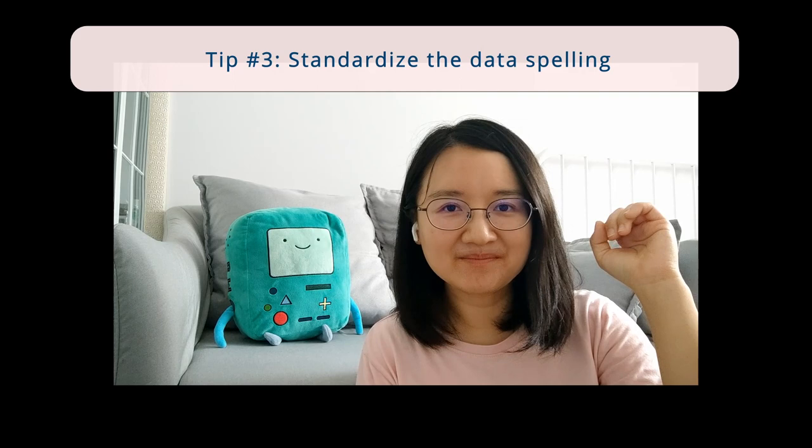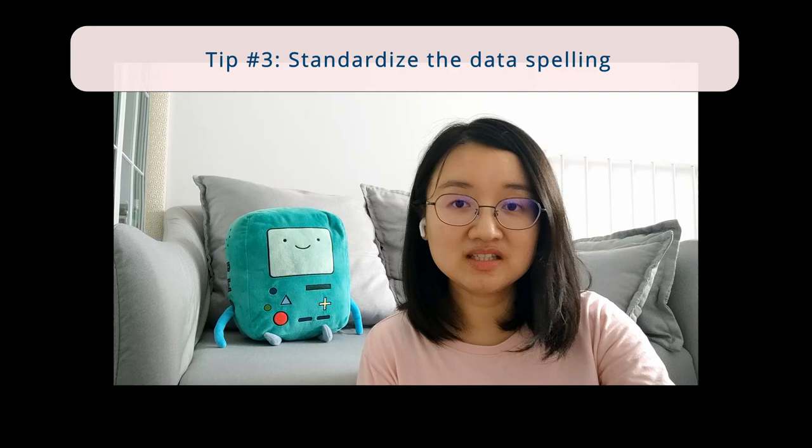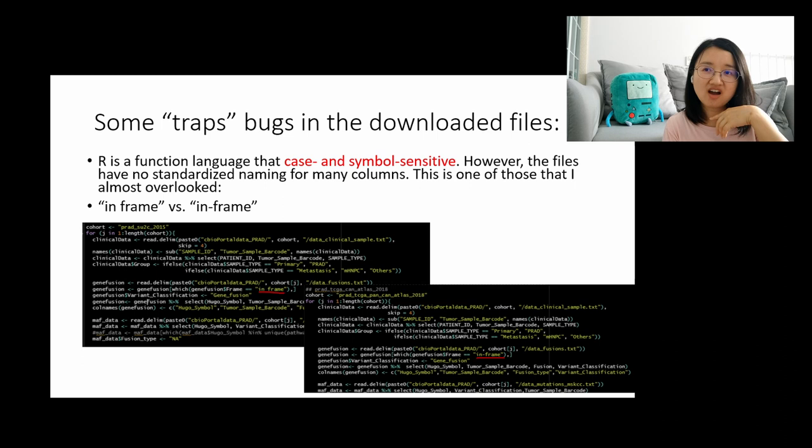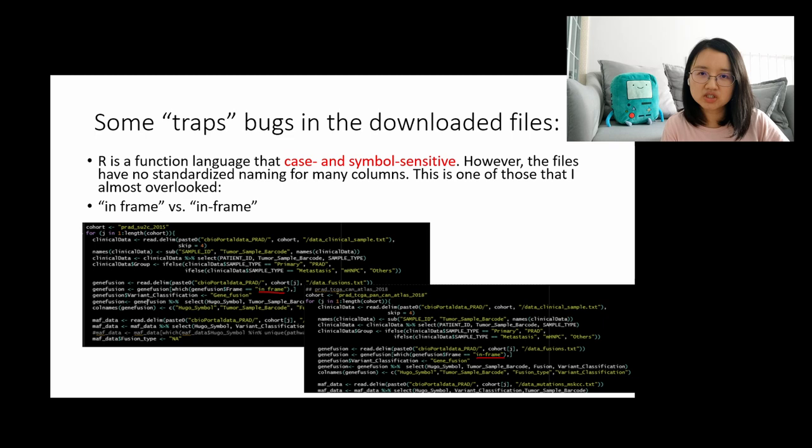Then, do the data cleaning. As mentioned earlier, the naming conventions and how they collect the dataset is always different from one cancer cohort to another. You will find that datasets always come with different naming styles, so make it a habit to standardize the naming yourself. For example, in the expression dataset the patient ID or sample ID might use a hyphen, while the clinical dataset uses a dot. In R, it is very sensitive to symbols and capitalization. For convenience, it's better to convert all types of symbols into just one — for example, use only a hyphen for all samples.